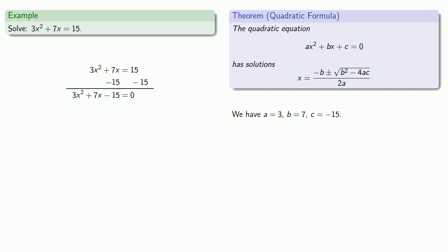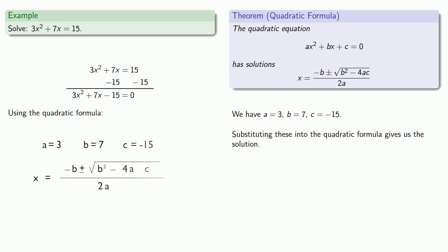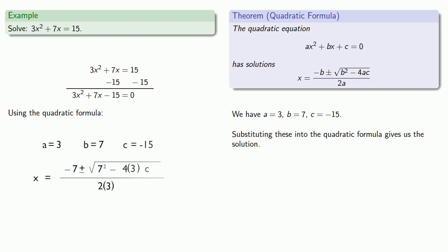We drop those values into the quadratic formula. Every place we see a, we replace it with 3; every place we see b, we replace it with 7; and every place we see c, we replace it with negative 15. Doing the arithmetic gives us our solutions using the quadratic formula.